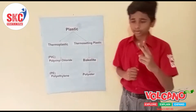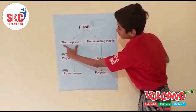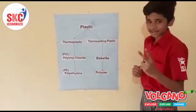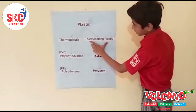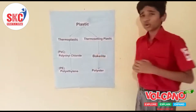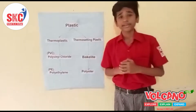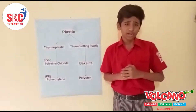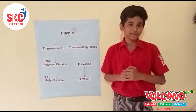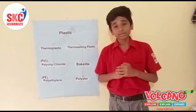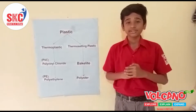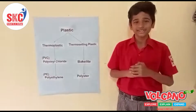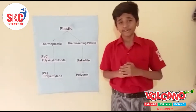There are two types of plastic. First is thermoplastic and second is thermosetting plastic. Thermoplastic is a substance which can be molded as per our wish, and thermosetting plastic is a substance which cannot be molded once it is given a specific shape.